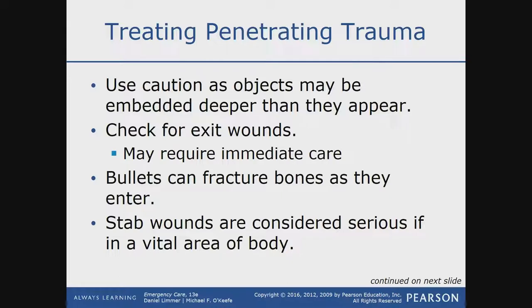Bullets can fracture bones as they enter the body. Stab wounds are considered serious if they're in a vital area — the thoracic cavity is very vital because it contains the heart and lungs. Penetrating objects typically means the bullet or object went in and out of the body, but that's not always the case. For smaller caliber bullets like a .22, or even a 9mm if it hits a bone, there are cases where the bullet will shatter bone and remain inside the body.